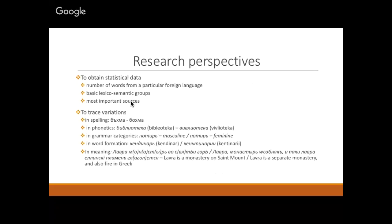In phonetics, Greek words have different pronunciations — sometimes 'biblioteca,' sometimes 'biblioteca' — and we can find all such variations in lexicons. In grammatical categories, not often but sometimes you can understand whether a word is masculine or feminine, according to the context of the explanation.